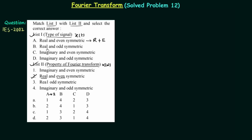Signal B is real and odd symmetric. When xt is real and odd, the corresponding Fourier transform is imaginary and odd. You can see the fourth type of Fourier transform is imaginary and odd, so B will match to 4.